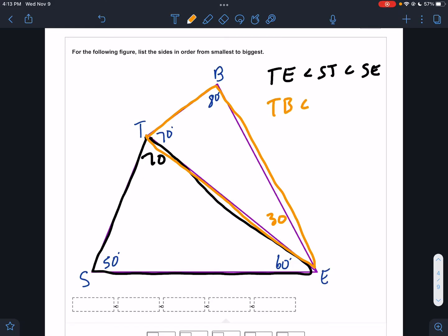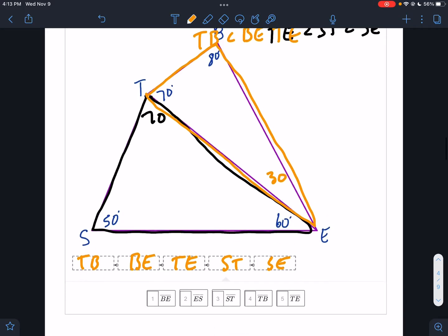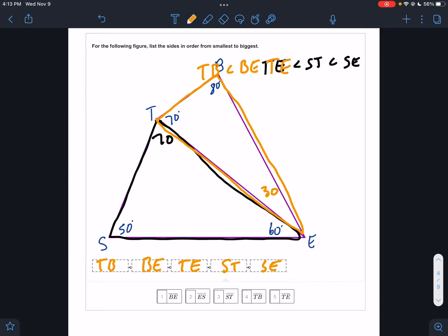Middle would be BE and biggest would be TE. So if we are going smallest to biggest overall, the overall order is TB, BE, TE, ST, SE. Well that's the overall order.